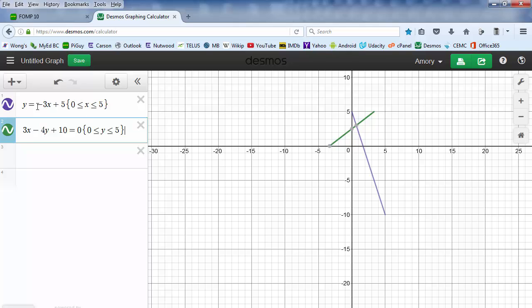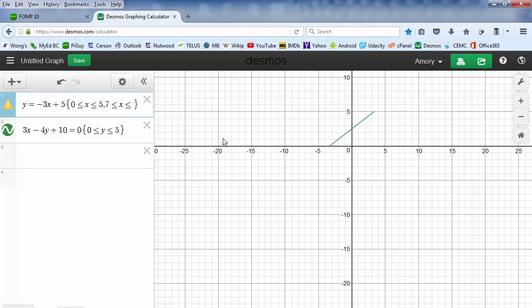If you wanted to use that same line, we can break this into multiple segments. All we have to do is insert a comma. Let's say we want to go from 7 is less than or equal to x is less than or equal to 10. Okay, so now we have a segment here and a segment here. That way we don't have to re-enter the equation of the line.